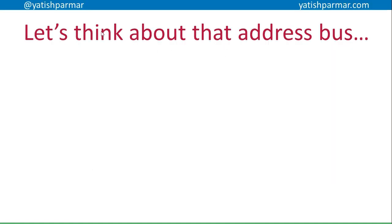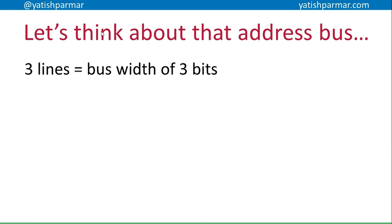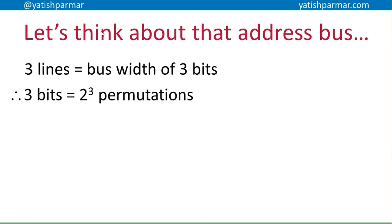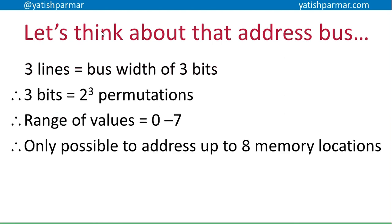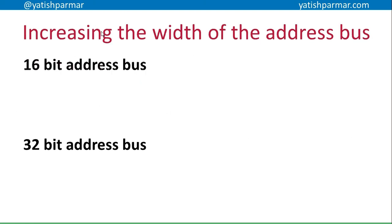Likewise, the data bus is two bits wide because it's got two lines. If I think about that address bus with three lines, the bus width of three bits gives me 2 to the 3 permutations — a range of values from zero to seven. Basically, I can only address up to eight memory locations. If each location carries a byte, I can only address eight bytes of memory.